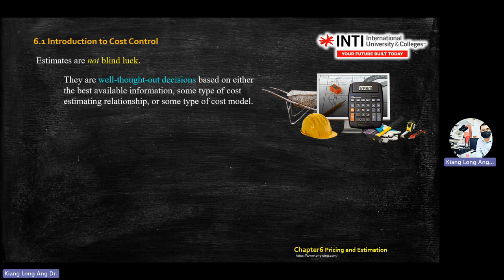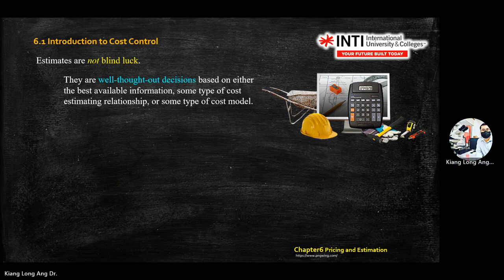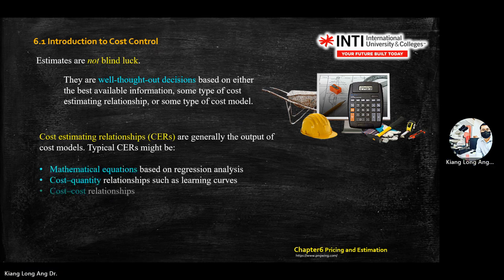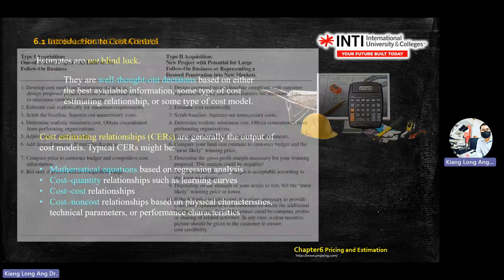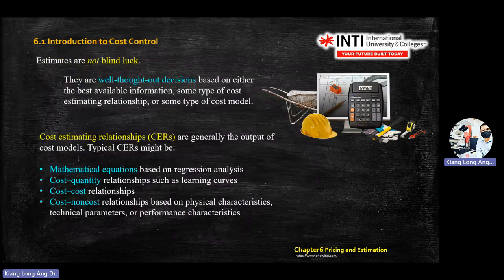In cost control, we can make estimations. This chapter has one or two equations to estimate the current value and the future value. There are four types of cost estimation relationships. The first one is CER — cost estimating relationship — where we use mathematical equations, cost-quality relationships, and cost-to-non-cost relationships. So we have four types in project management.